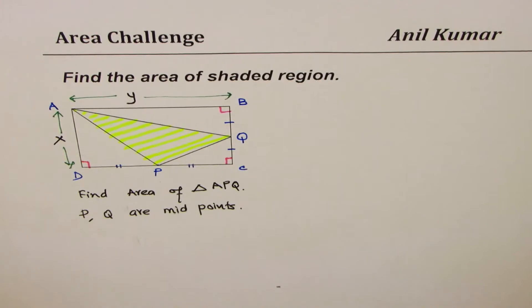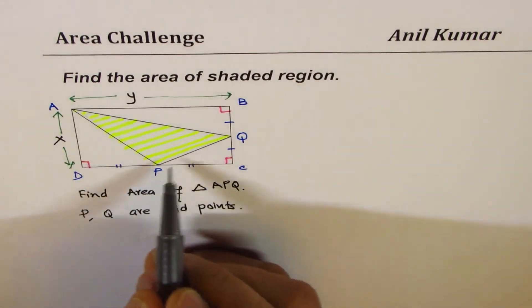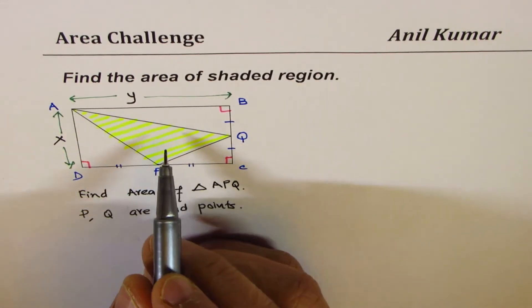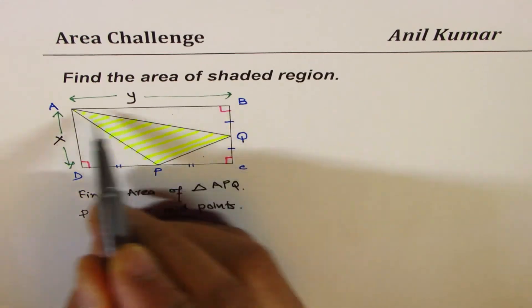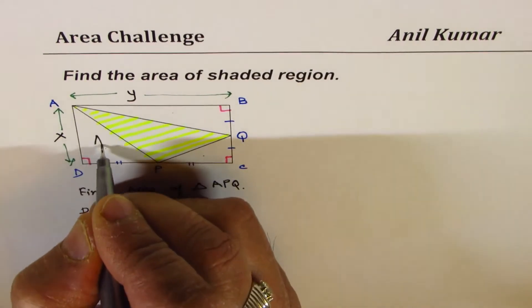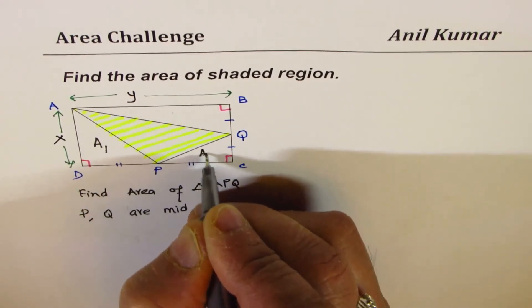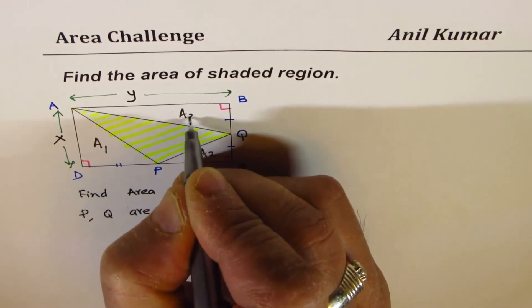The strategy here is to find the area of triangle: we'll take away area of these small triangles from rectangle. So let's call these small triangles as A1, A2, and A3.